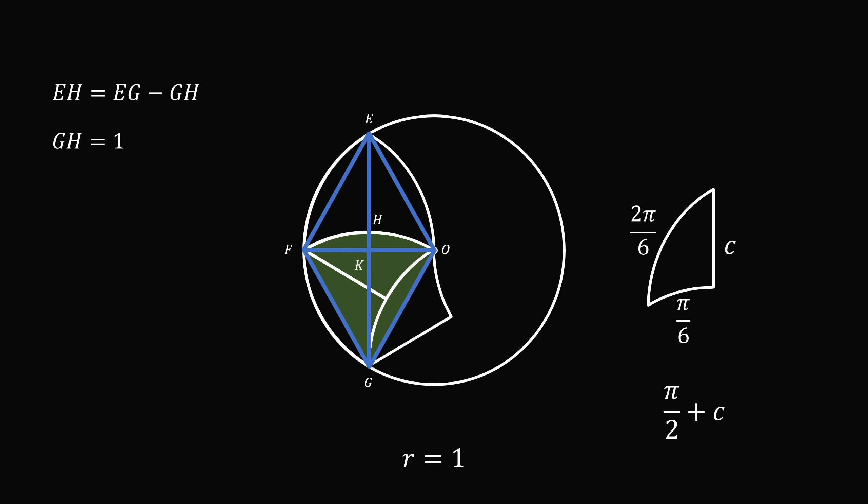Label the point k as the intersection of fo with eg. We know that oe is equal to 1, and ek bisects the equilateral triangle. So, the shorter leg is equal to 1 half, and the height, or the longer leg, is equal to square root of 3 over 2. This is true for both ek and gk.